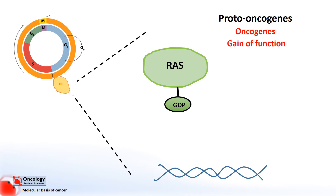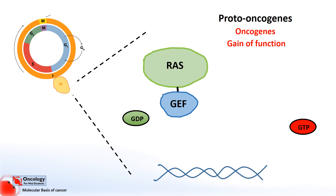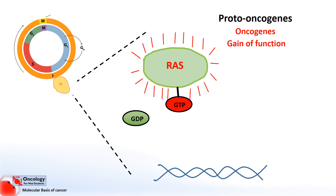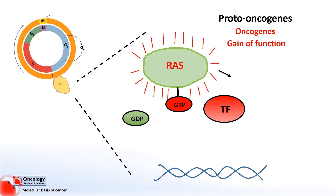In order to become active, the RAS protein must substitute the GDP molecule for another molecule, GTP — guanosine triphosphate. This happens by the action of a protein called a guanosine triphosphate exchange factor, or GTP exchange factor. This type of protein exchanges the GDP on the inactive RAS protein for a GTP, which activates the RAS protein. RAS then in turn activates a number of transcription factors that lead to the activation of genes involved in progressing through the cell cycle and dividing.